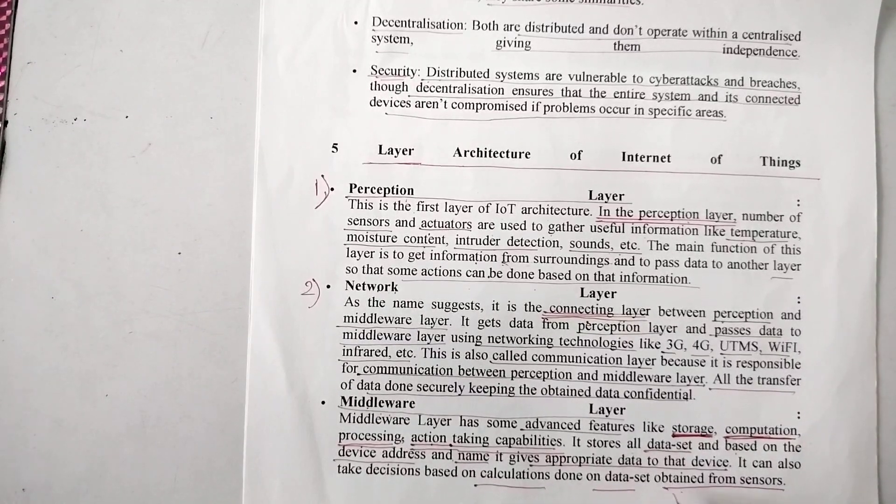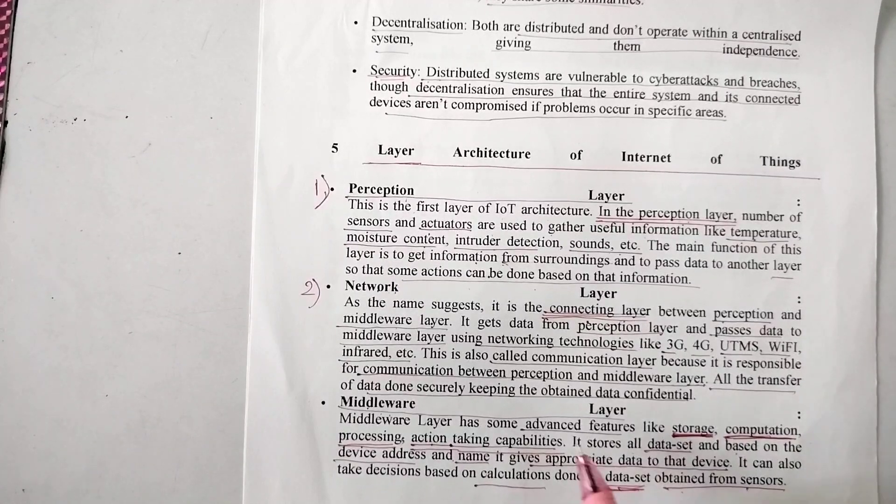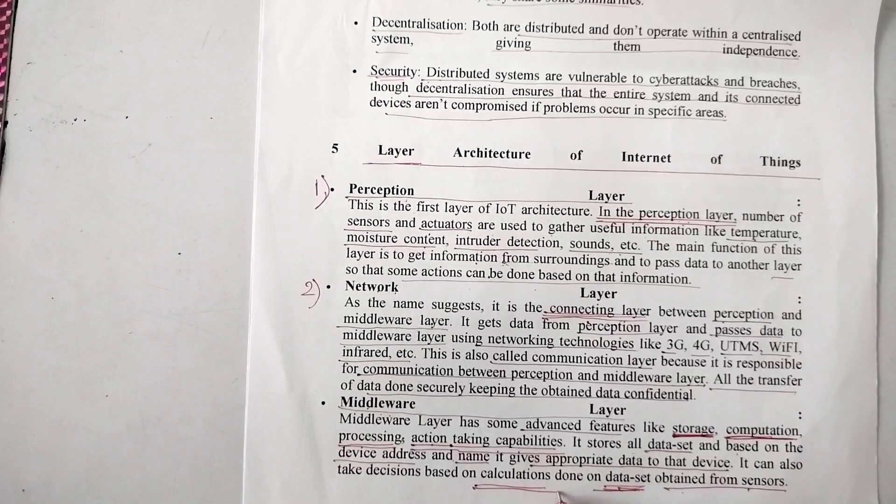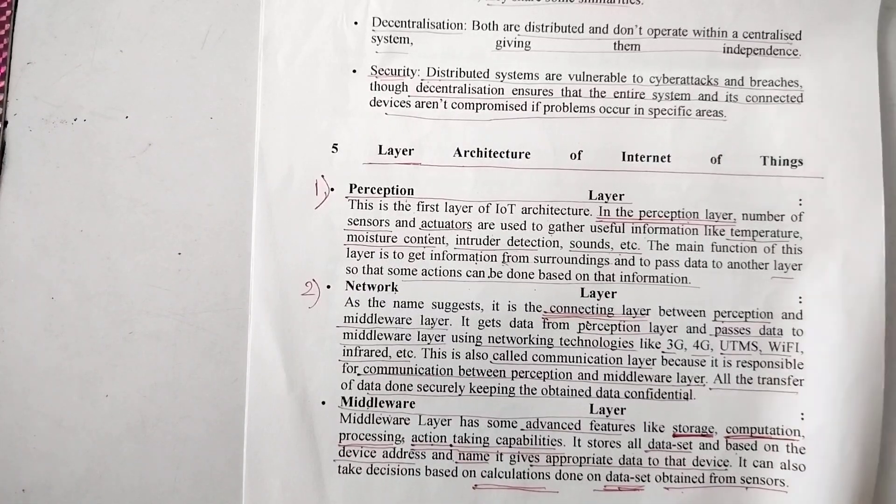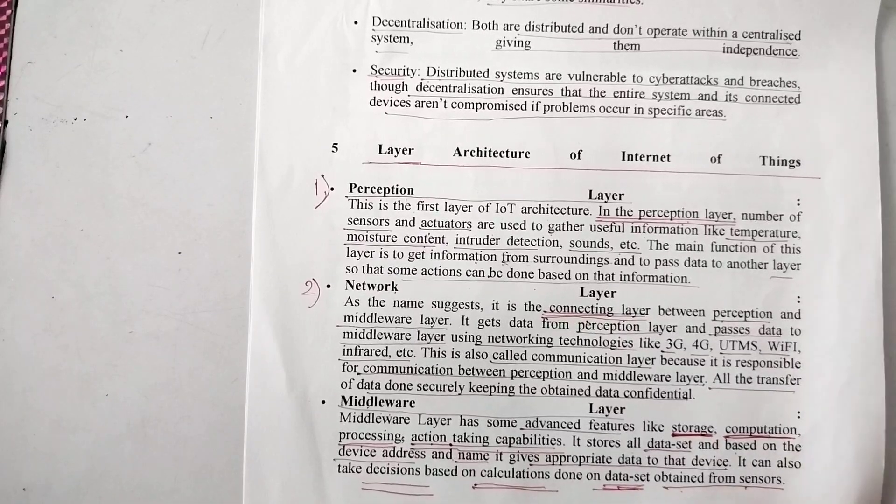It can also take decisions based on calculations done on the data set obtained from sensors. Whatever data or collection of data called the data set is obtained from sensors, this particular layer, the middleware layer, can do calculations on that data and also take some decisions based on those calculations.